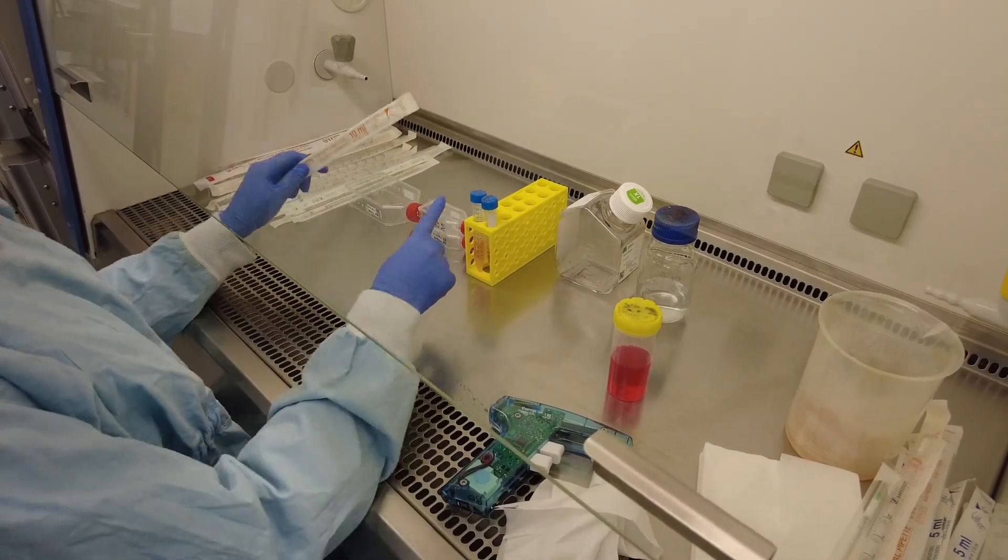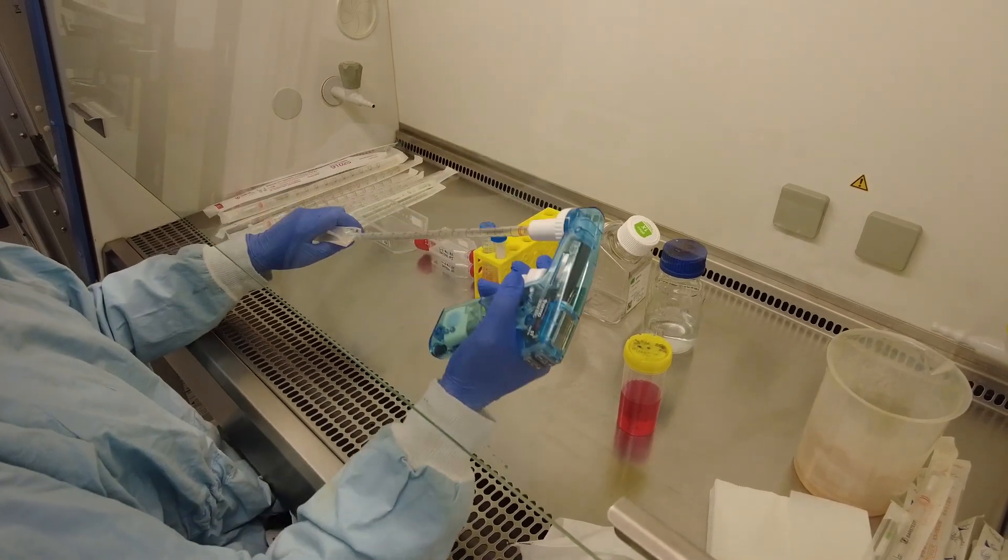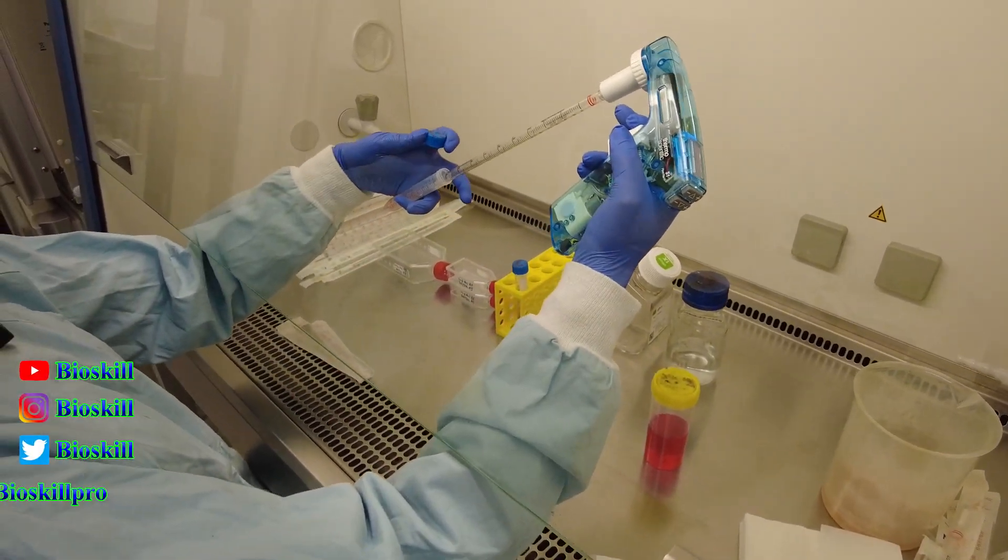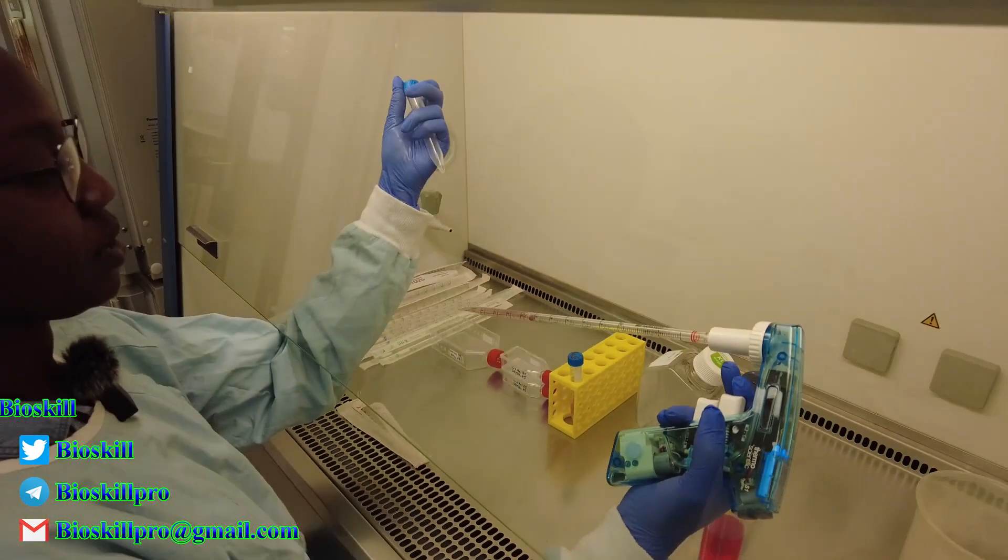So now we're going to remove the media from each flask. We'll do them one at a time. So removing the media from tube number one. Leave a little bit of media at the bottom there.